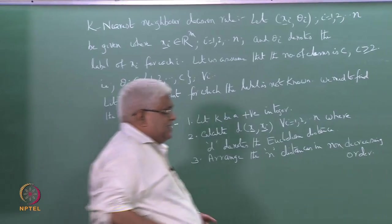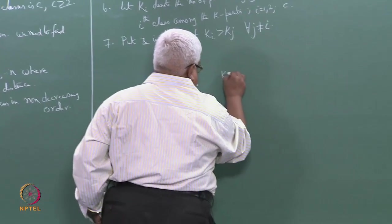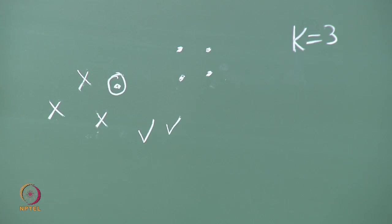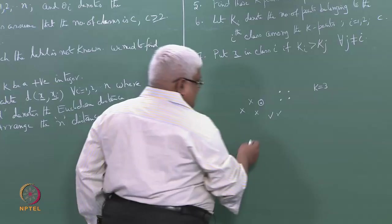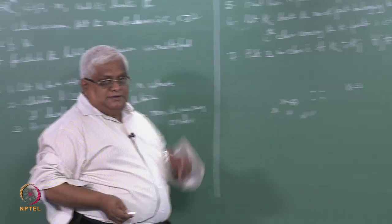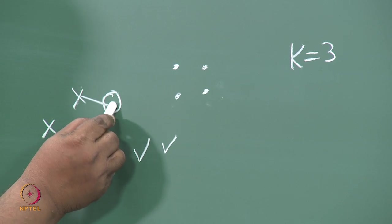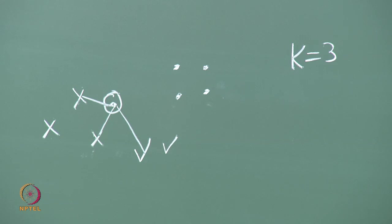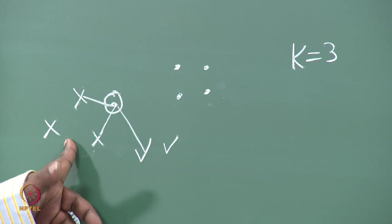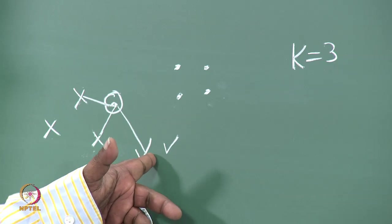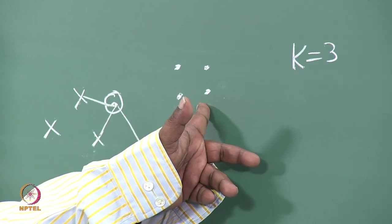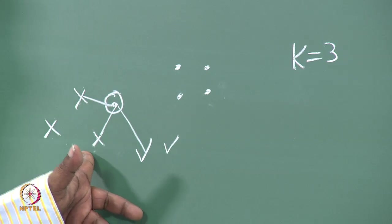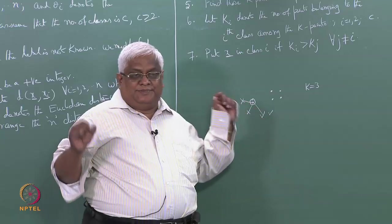If k equals 3, we find the nine distances and arrange them in increasing order. Say the first distance is this point, the second distance is this point, and the third distance is this point. From class 1 we have two representatives, from class 2 one, from class 3 zero. So k1 equals 2 is the maximum — put this point in class 1. This is basically the rule.